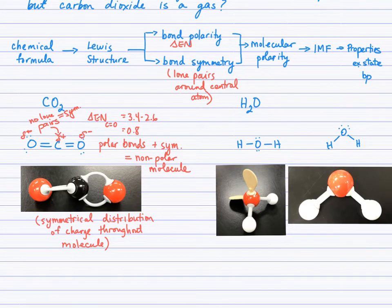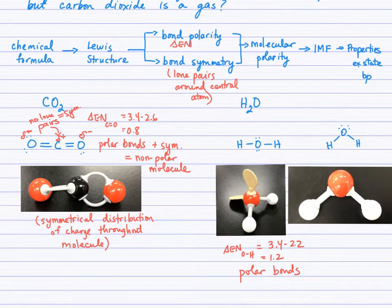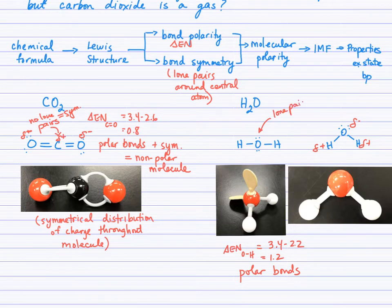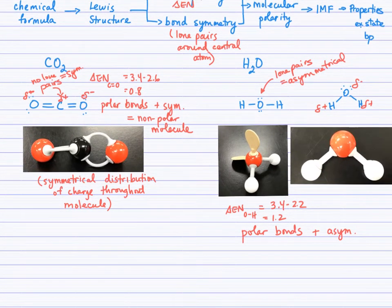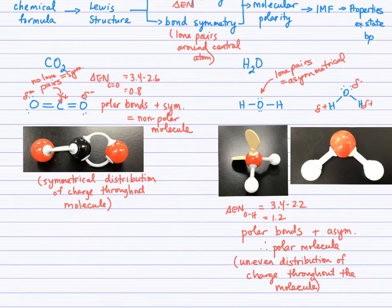Water, on the other hand, has oxygen-hydrogen bonds where the electronegativity difference turns out to be 1.2, giving polar bonds we can indicate with delta negative and delta positive. As for symmetry — when you look at your Lewis structure and notice the lone pairs around the central atom, that means the molecule is asymmetrical in its bonding. Polar bonds together with asymmetry means that, like water, you have a polar molecule.